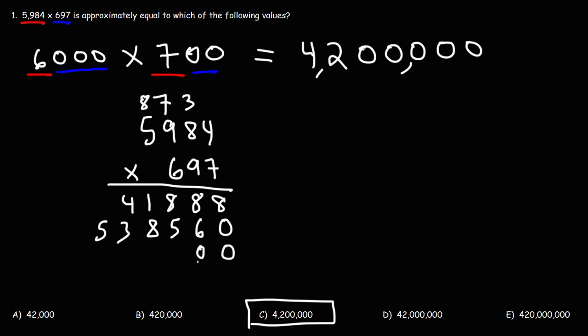Now, we're going to add two zeros. And then, 6 times 4 is 24. Carry over the 2. 6 times 8 is 48. Plus 2, that's 50. 6 times 9 is 54. Plus 5, that's 59. And then, 6 times 5 is 30. Plus 5, we get 35.